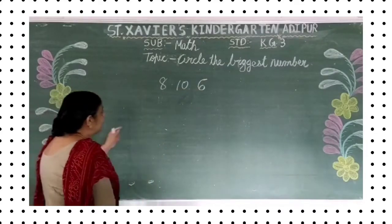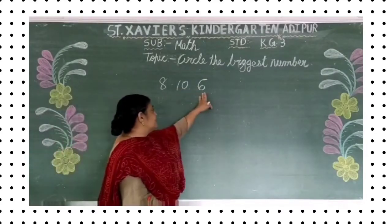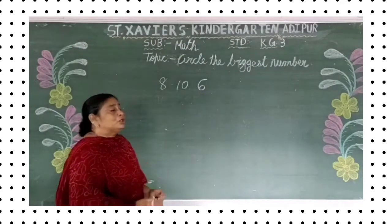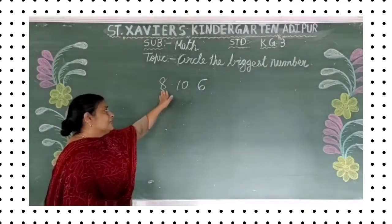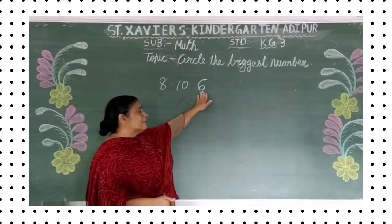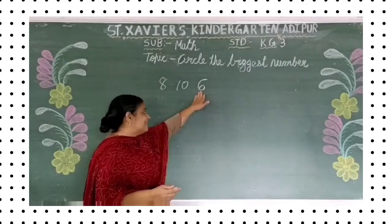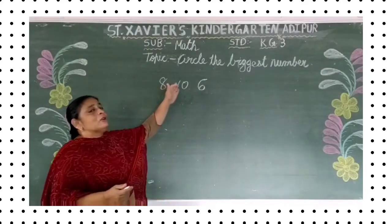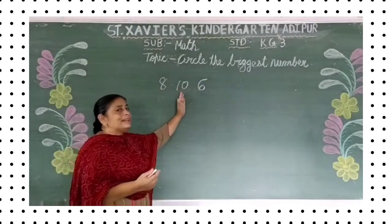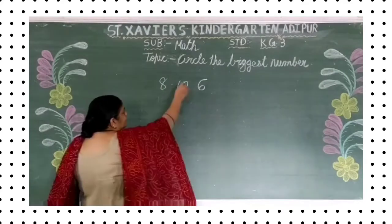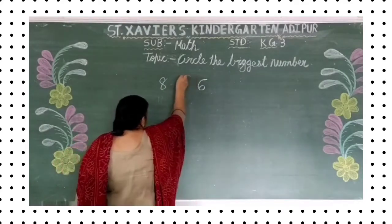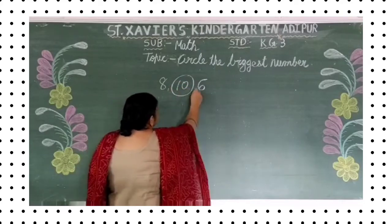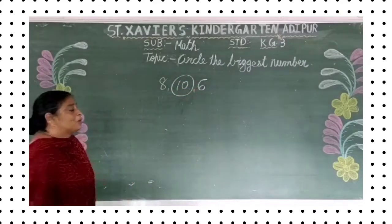Yaan peh maine three numbers diya hoa. One is eight, ten and six. So, eight — sabse chota se count karein: one, two, three, four, five, six, seven, eight. Aur bhi bada na? Nine, ten. Toh which one is the biggest? Ten. Toh ten peh aapko circle karna hai is direkse.